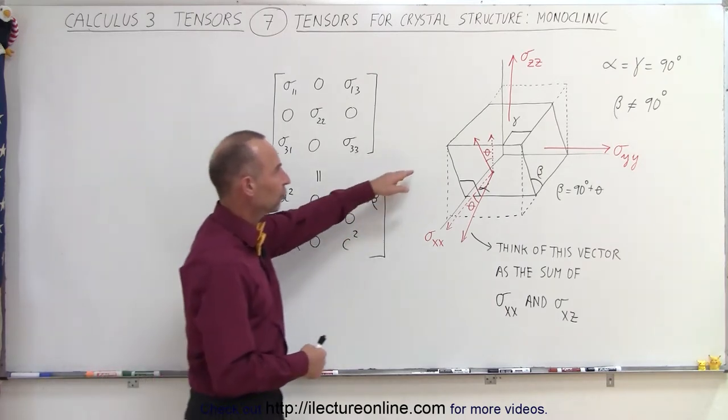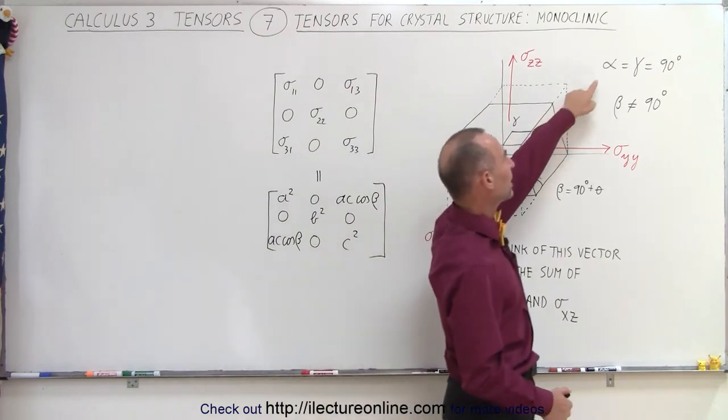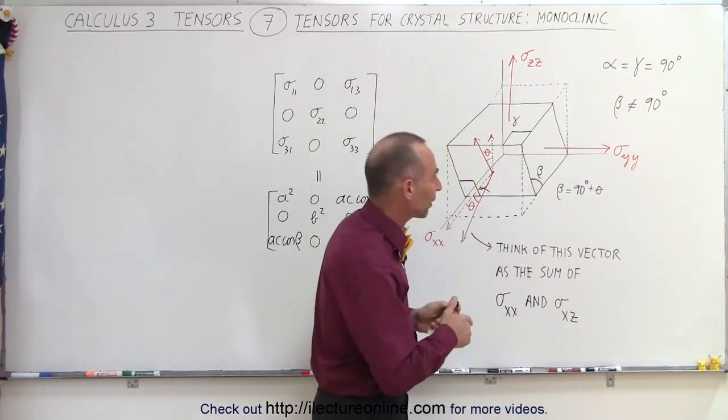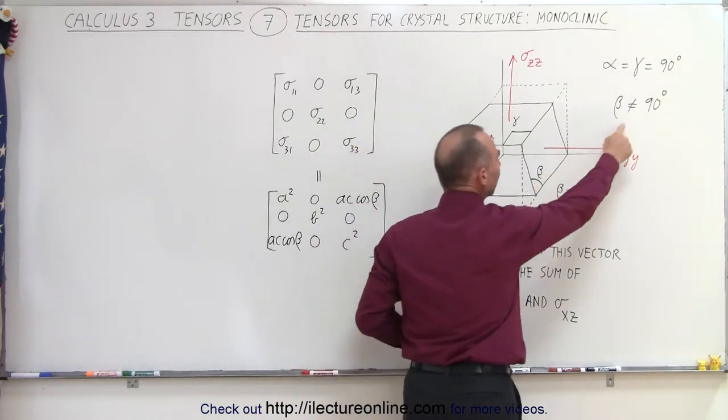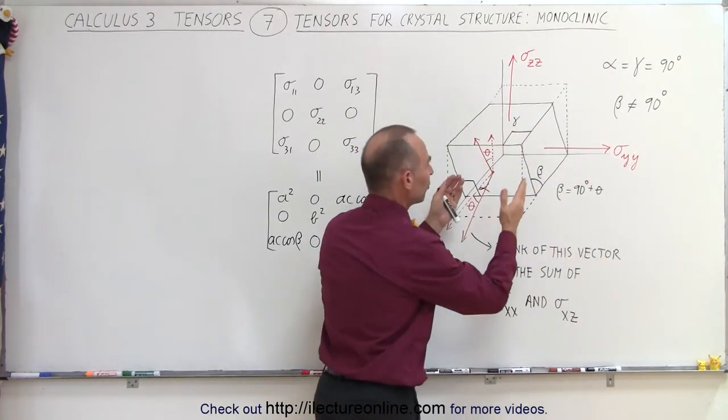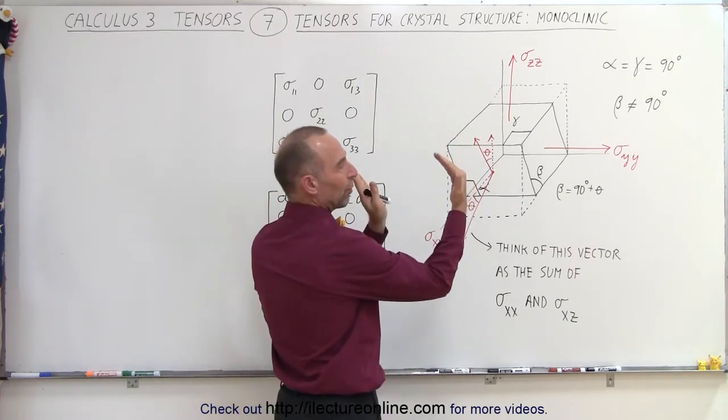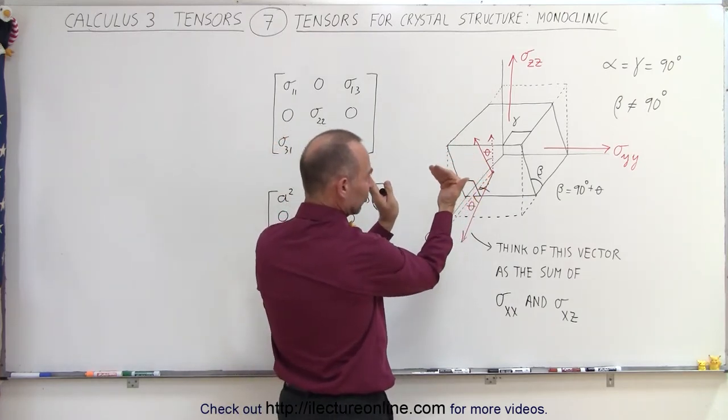The monoclinic crystal structure is such that two of the three angles still have a 90 degree angle, so they're basically cubic in that respect. With one exception, the beta angle here is not equal to 90 degrees, which means that we can basically start with a box and push it into one direction, let's say in this case into the x direction.